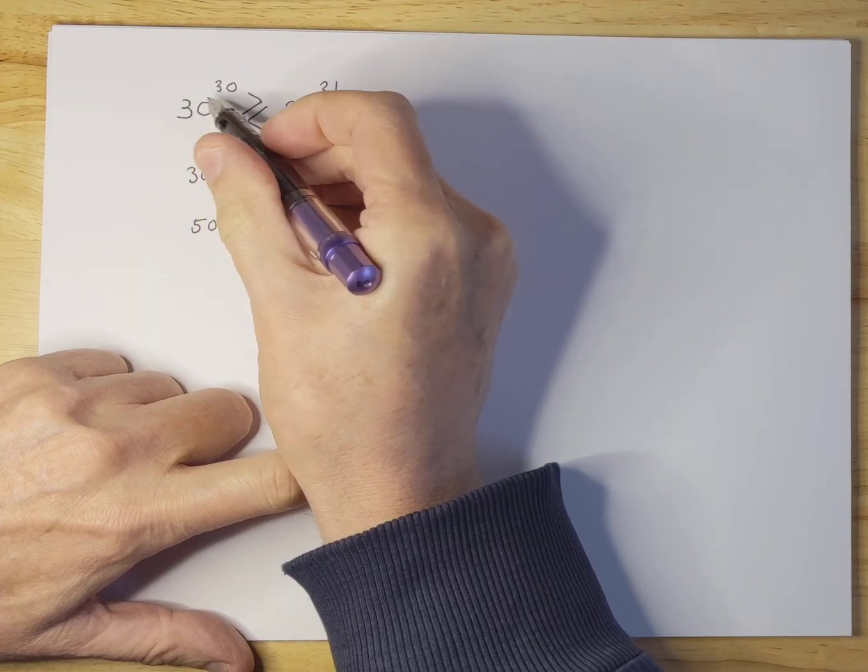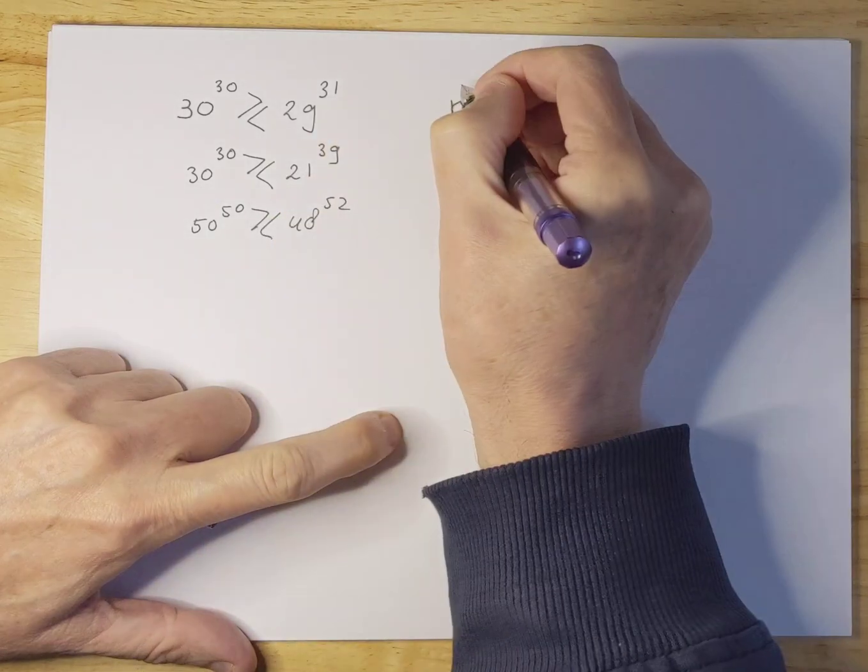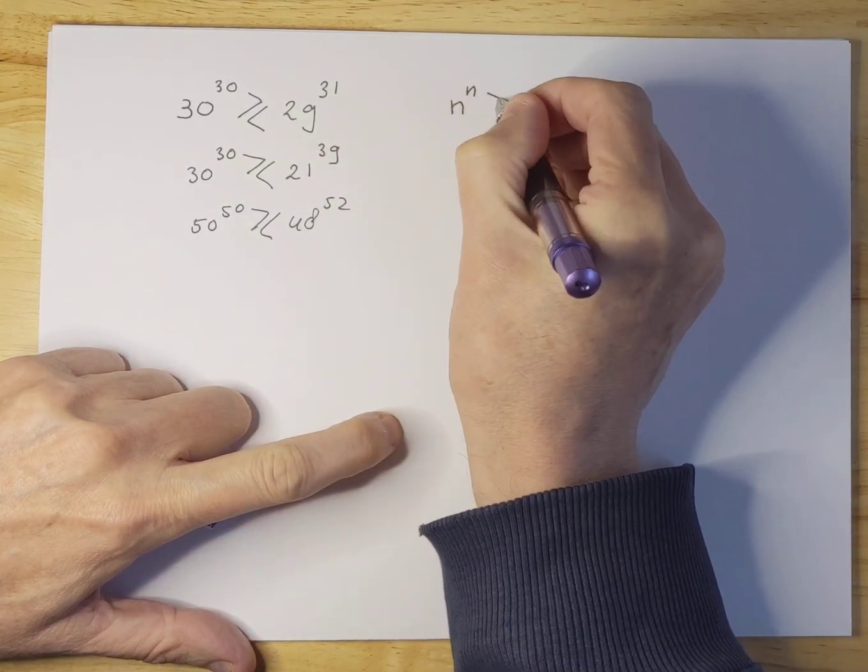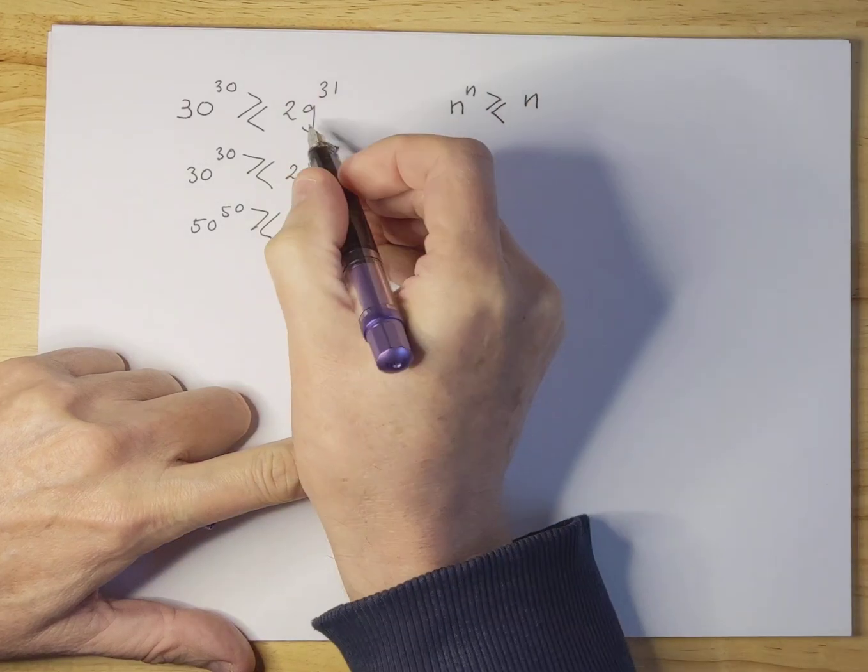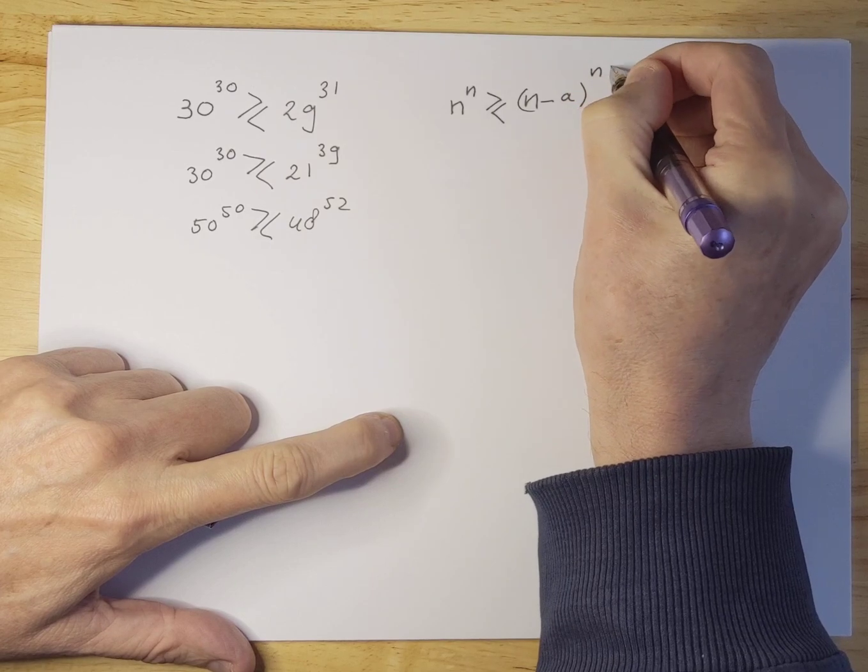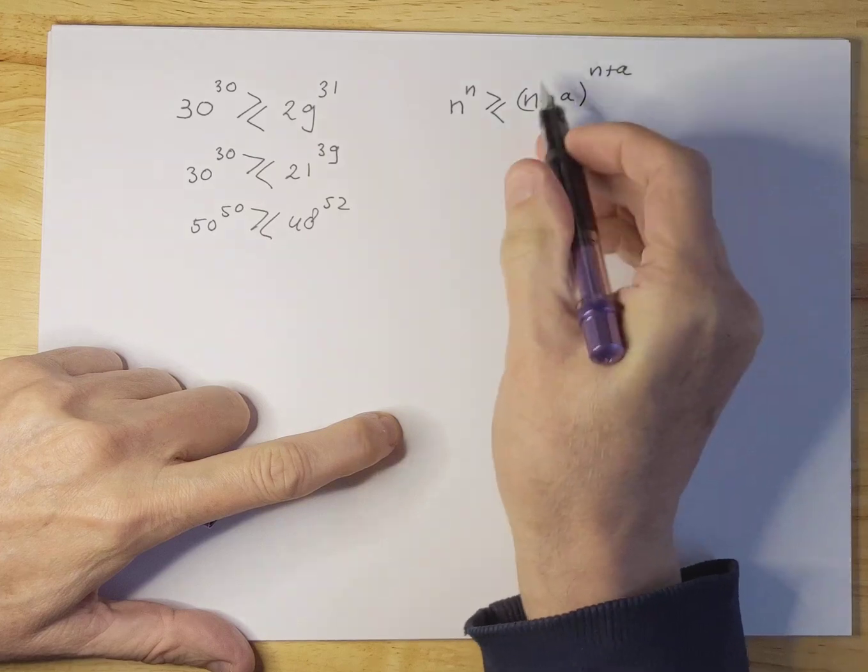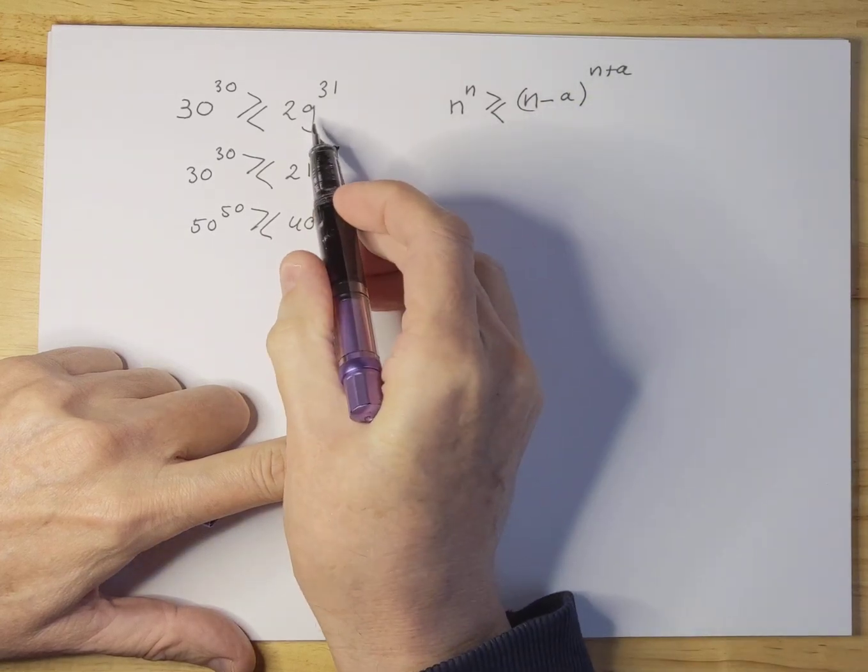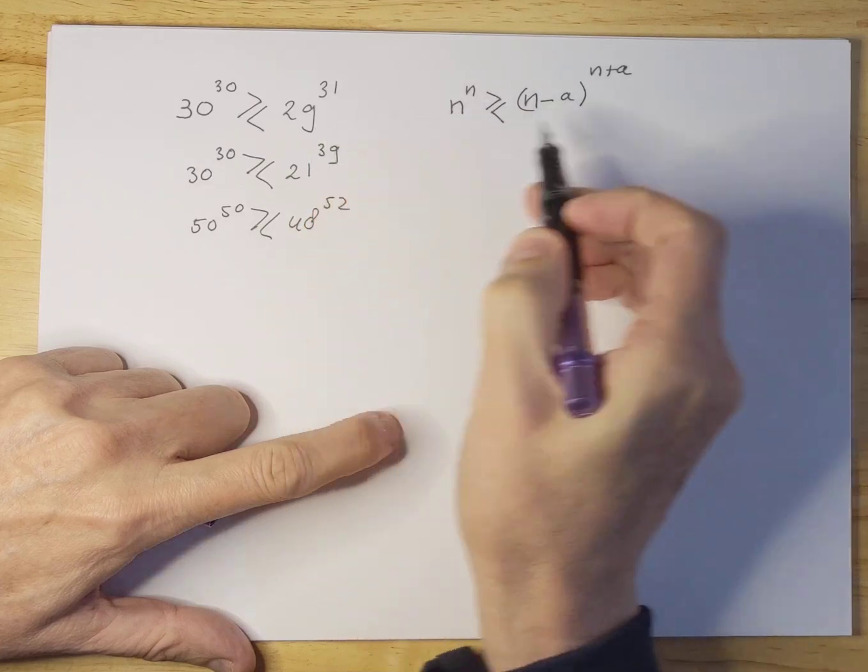We're going to say this 30 here we're going to make n. So we do n to the n and we ask ourselves is this bigger or smaller than n minus a to the power of n plus a. This is really the question we want to solve for a number one, two, three all the way up to nine for instance and then see what happens.